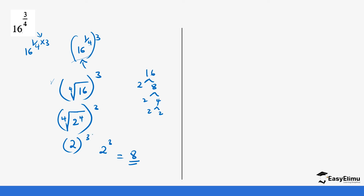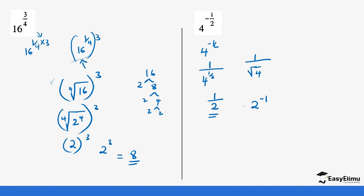Now we have a negative value. Remember we talked about negative indices — you introduce a fraction as the first step. So 4^(-1/2) becomes 1 over 4^(1/2). This is the same as 1 over the square root of 4, and the square root of 4 is 2, giving us 1/2. You can also write this as 2^(-1), which is the same thing.